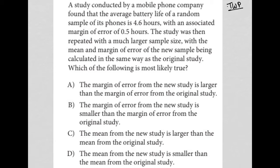So I'm not reading the entire thing through and trying to remember the information or having to go back and reread it multiple times. I'm just going to write the stuff down as I see it. So the very first sentence here says a study conducted by a mobile phone company found that the average battery life of a random sample of its phones is 4.6 hours with an associated margin of error of 0.5 hours.